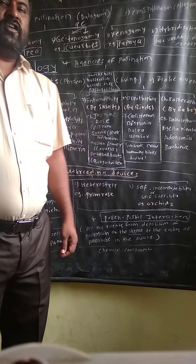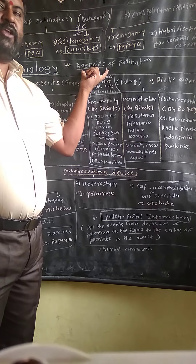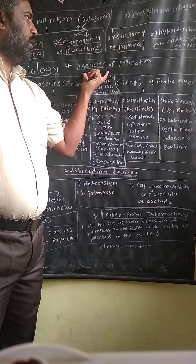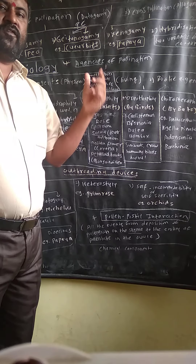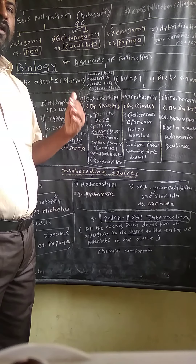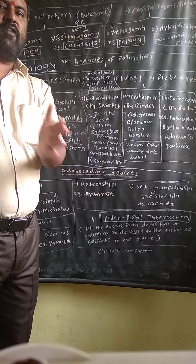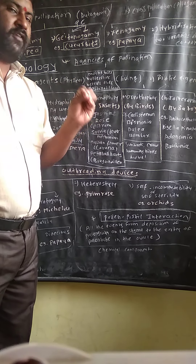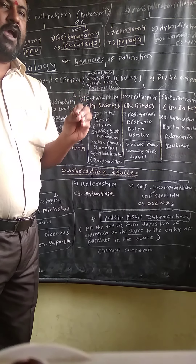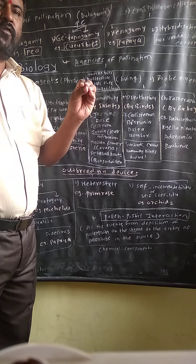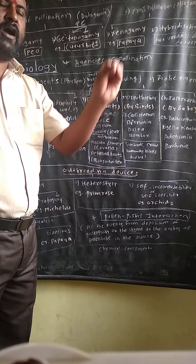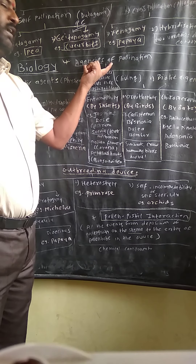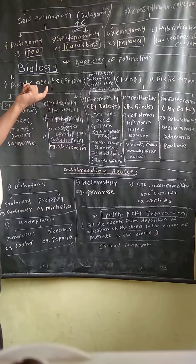Today we are going to discuss agencies of pollination. As you already studied in the last lecture, the transfer of pollen grains from anther to the stigma of a flower is called pollination. There are two types: self pollination and cross pollination. Pollen grains are non-motile, so they require a carrier. Those carriers which transfer pollen grains from anther to stigma are called agencies of pollination.